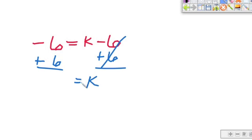These cancel because a negative 6 and a positive 6 come to a zero. Our k is now by itself. Look over here. Negative 6 and a positive 6. This becomes zero. So k equals zero on this one. So you would just put k equals zero.